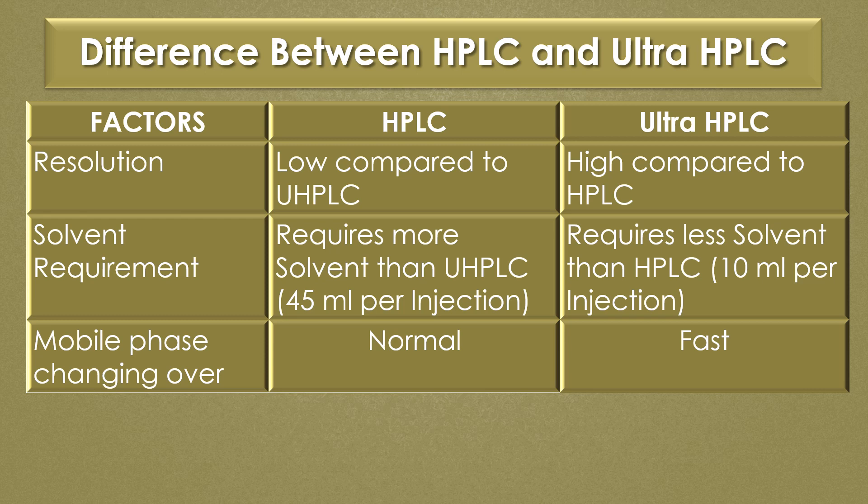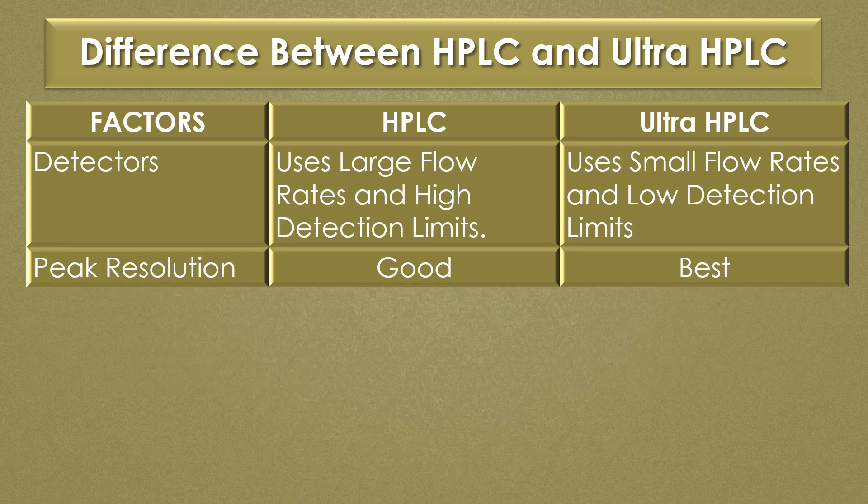The mobile phase changeover is normal in HPLC, but fast in Ultra HPLC. The detectors of HPLC use large flow rates and high detection limits, while the detectors of Ultra HPLC use small flow rates and low detection limits.